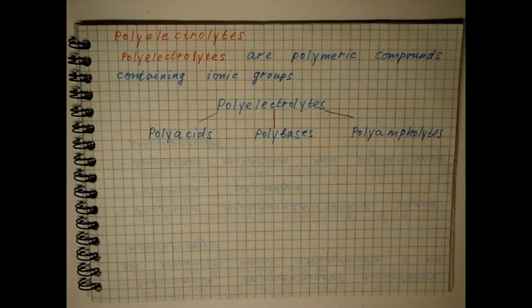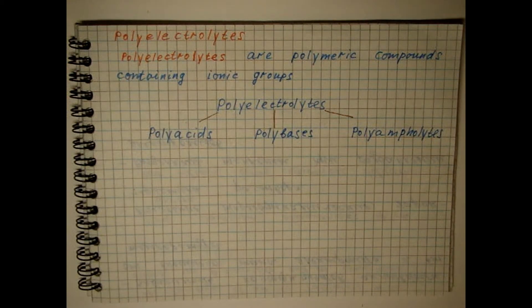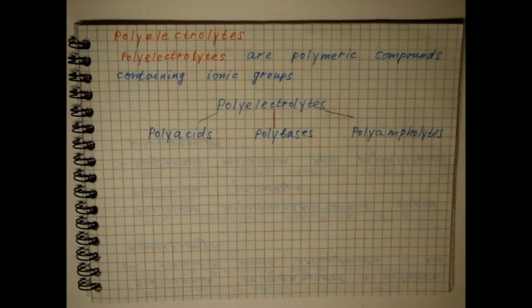An example of a strong polyacid is polyethylen-sulfonic acid. The weak polyacid is polyacrylic acid. Weak polymer bases are represented by polymers containing nitrogen atoms capable of attaching a proton in aqueous media.